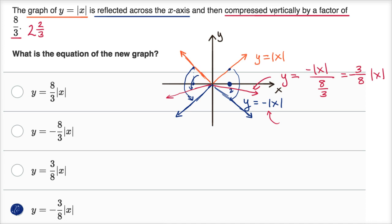If we said stretching vertically, we would just multiply by eight-thirds. But since we're compressing, we would divide by eight-thirds. Or multiply by its reciprocal.